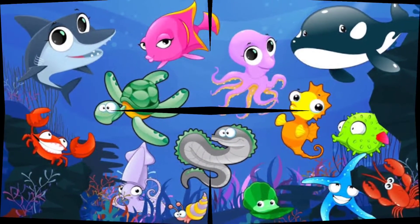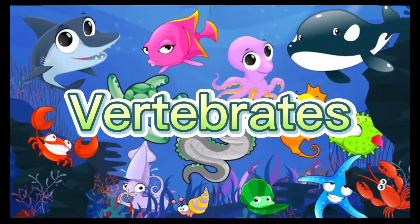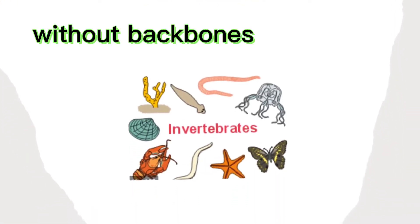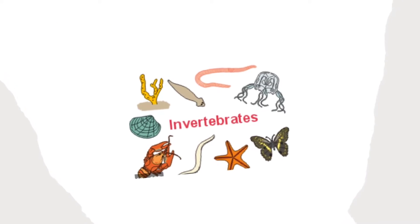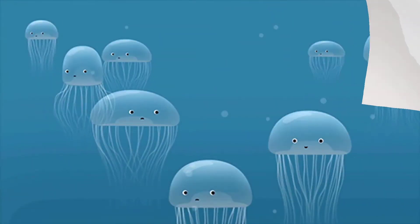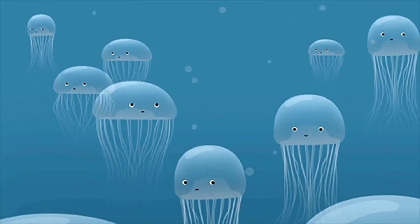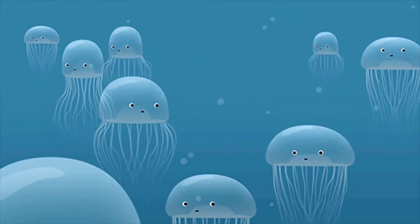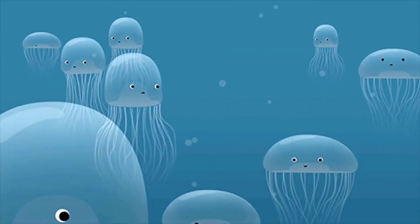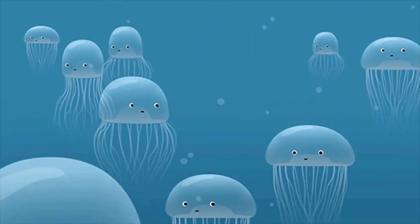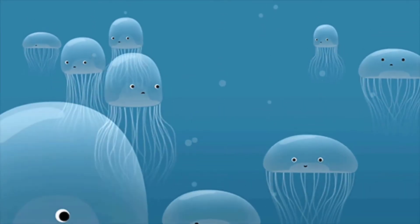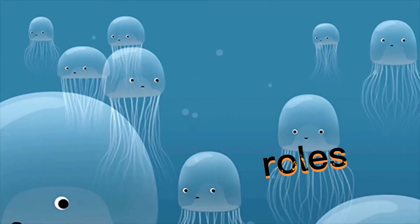Animals can be divided into two groups: vertebrates and invertebrates. Invertebrates are animals without a backbone. However, the absence of a backbone does not hinder or affect their survival. Invertebrates live in all kinds of environments and in almost every place on Earth. They live on land, water, or both. They may be free-living or parasitic. They come in all forms, sizes, shapes, colors, and roles in the ecosystem.